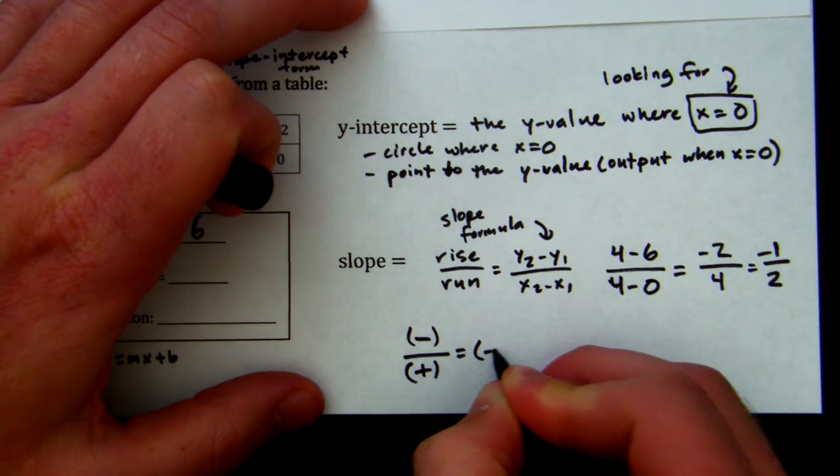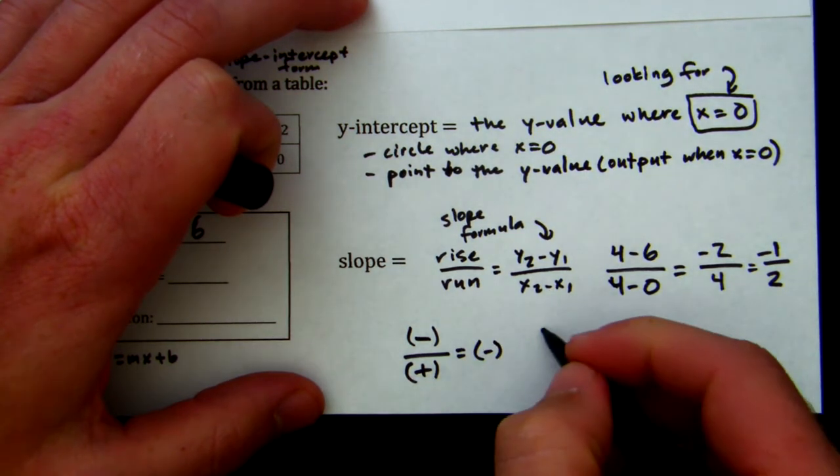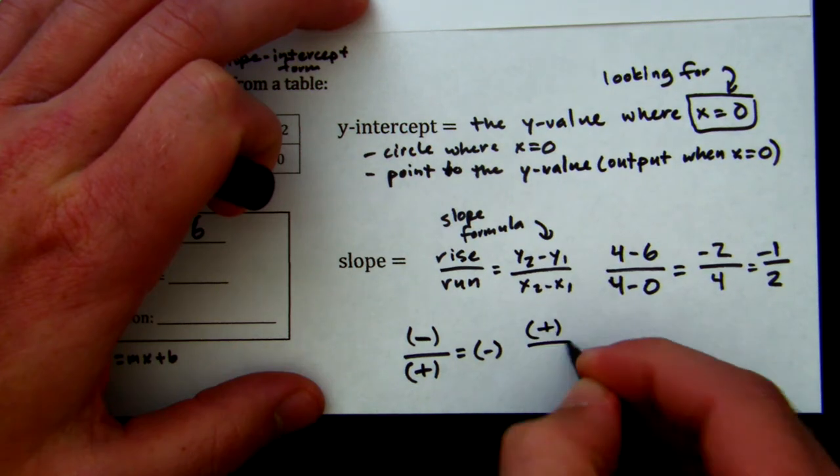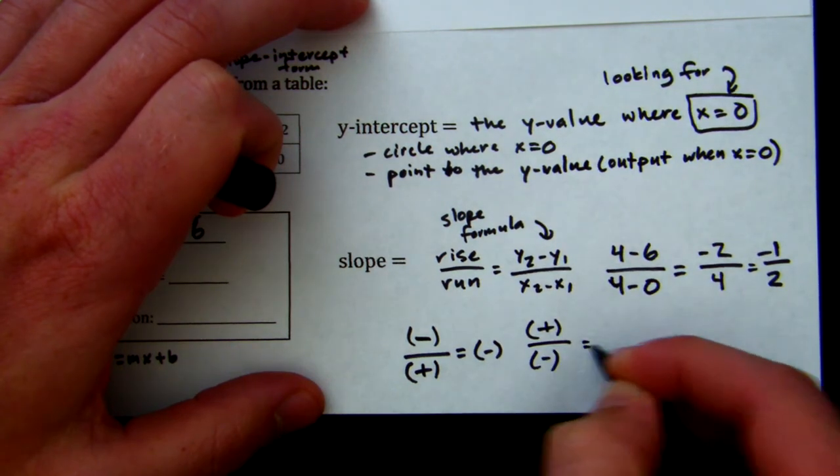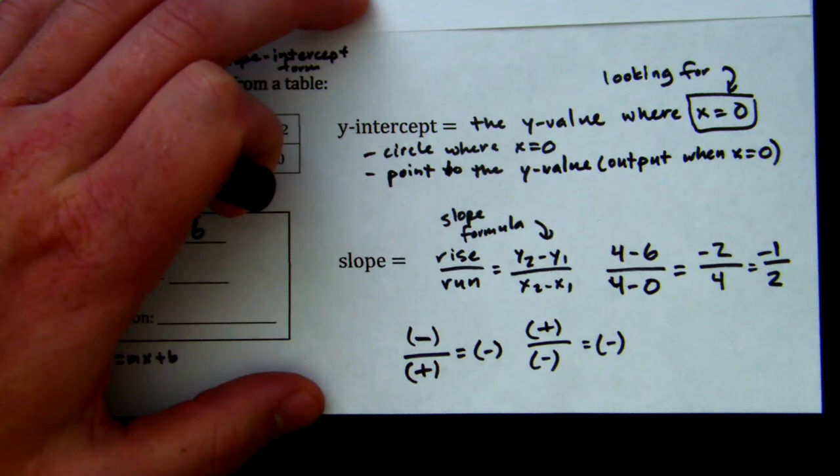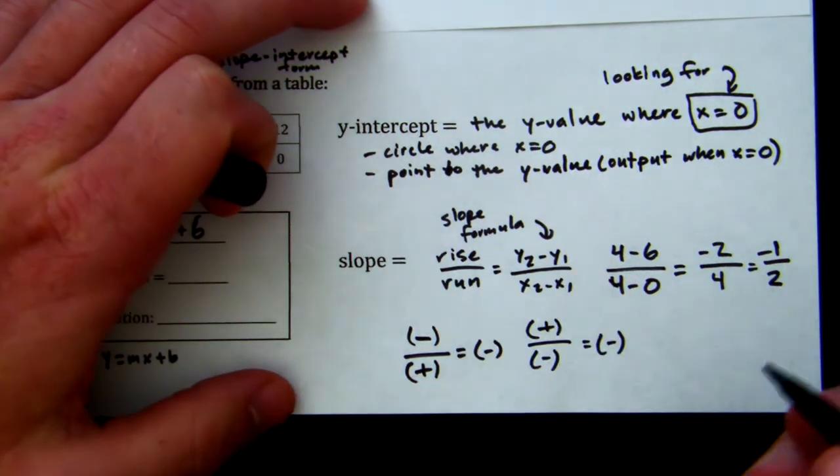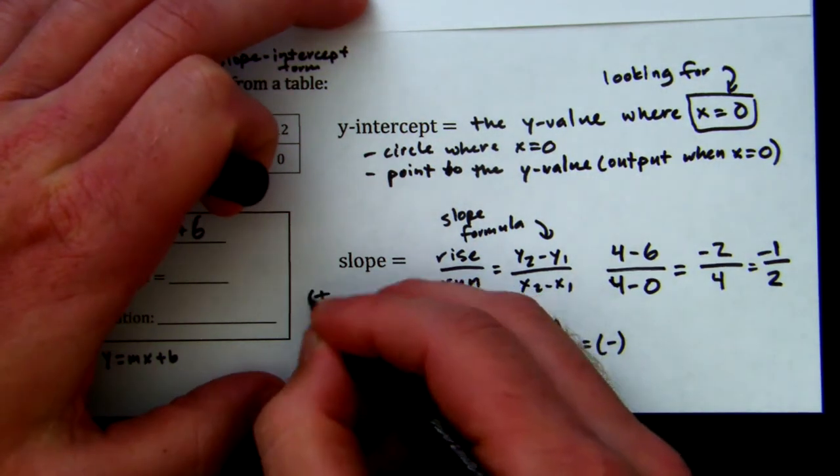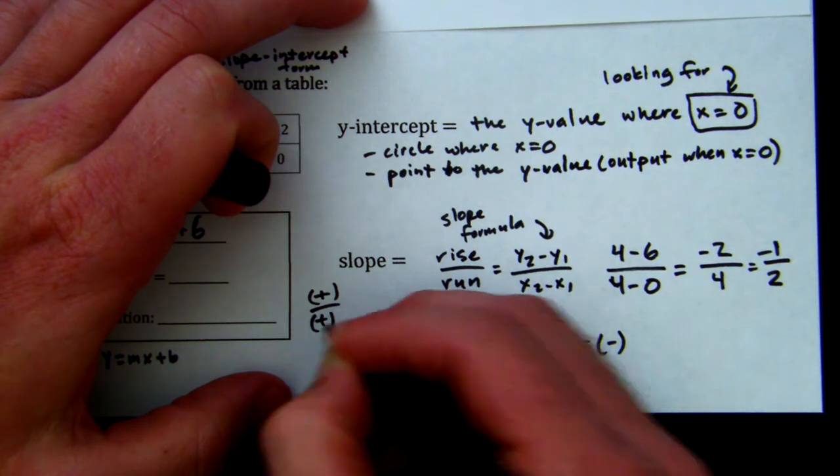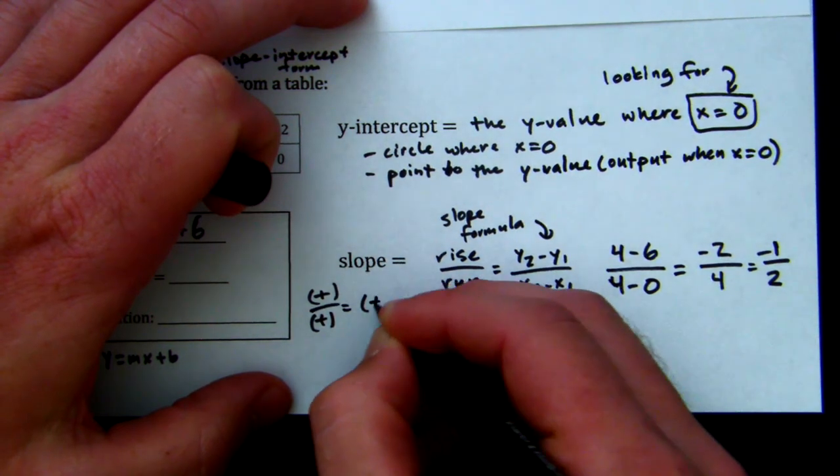If you have a negative number over a positive number, your slope is negative. If you have a positive number over a negative number, your slope is negative.